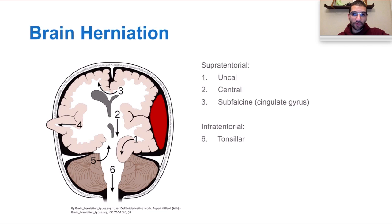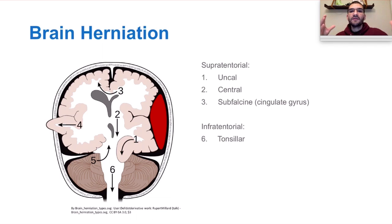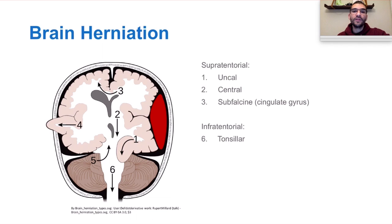Other cranial nerves with parasympathetic function include cranial nerve seven, which provides function to the lacrimal and mouth glands; cranial nerve nine — the glossopharyngeal — which provides function to the parotid gland; and cranial nerve ten — the vagus nerve — the major parasympathetic nerve, giving parasympathetic function to the heart and lungs. Classically you get bradycardia, bronchoconstriction, and inability for the GI system to function.